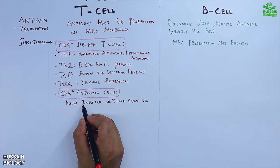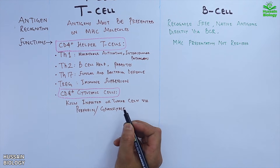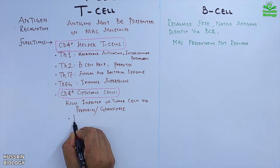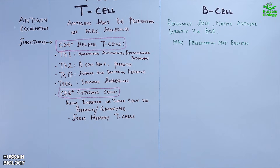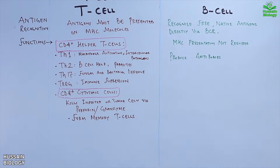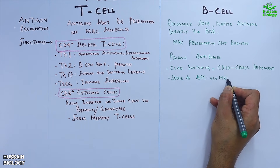CD8+ cytotoxic T-cells kill infected or tumor cells using perforin and granzymes, and also help form memory T-cells. The functions of B-cells include producing antibodies, undergoing class switching which is CD40/CD40L dependent, acting as antigen-presenting cells via MHC class 2, and helping form memory B-cells.